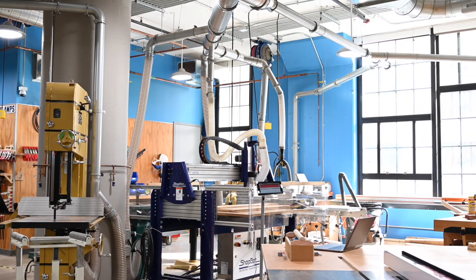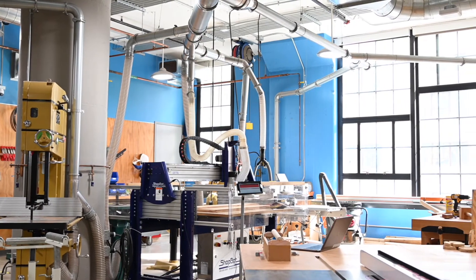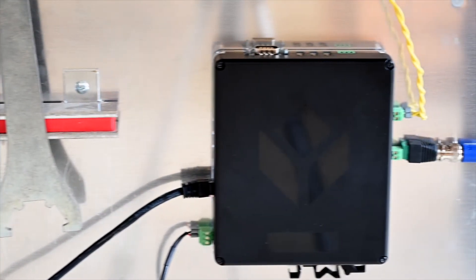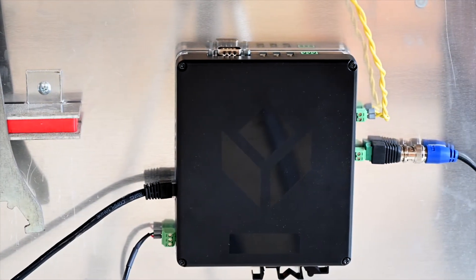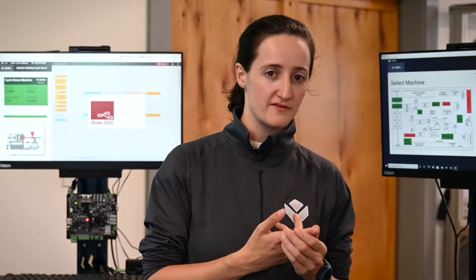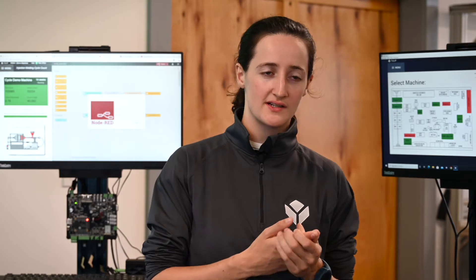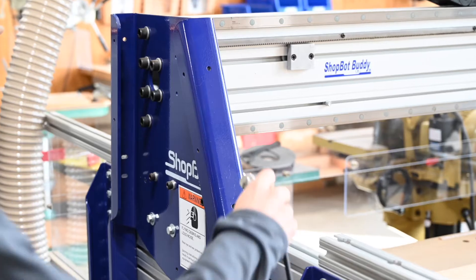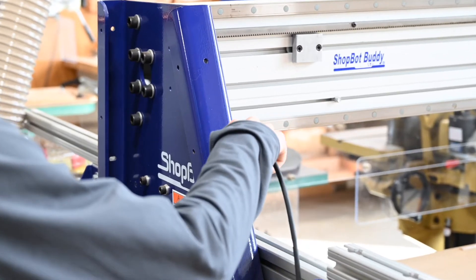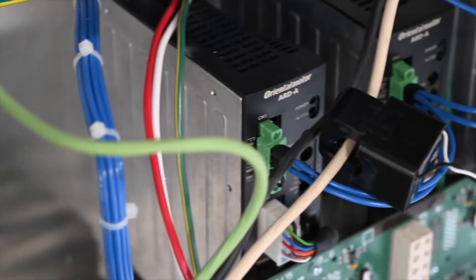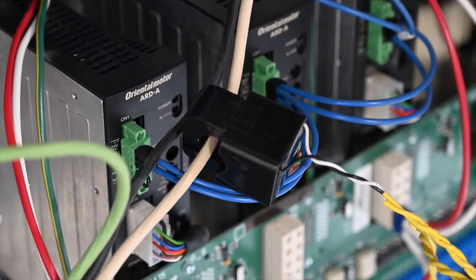At Autodesk we were testing using the Edge.io to monitor a CNC mill, and to do this we were using both a vibration sensor and a current clamp. The vibration sensor was placed on the chassis of the CNC mill, and the current clamp was hooked up to the power supply.